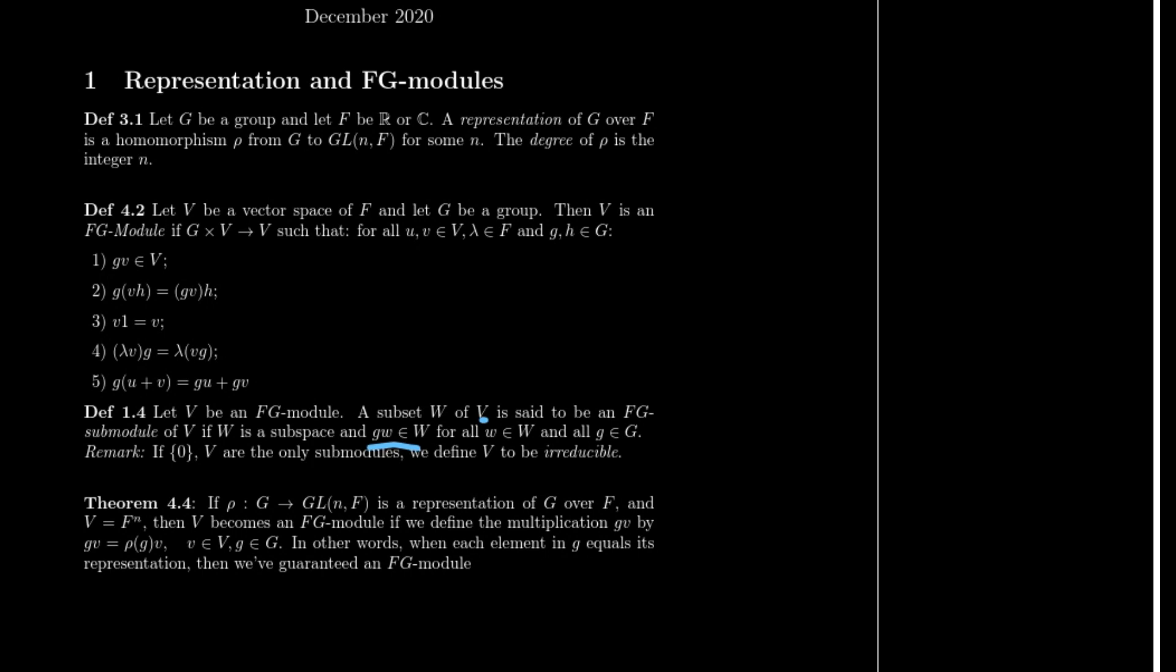An important kind of detail to this is the fact that we always have the trivial submodule as well as the improper submodule. We are able to have V be its own submodule, and the identity will always be a submodule within this. If these are the only two submodules, then we're going to call V an irreducible module.